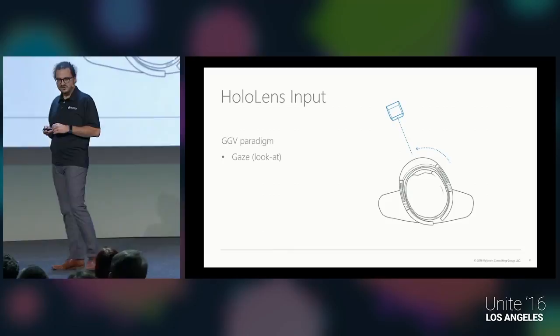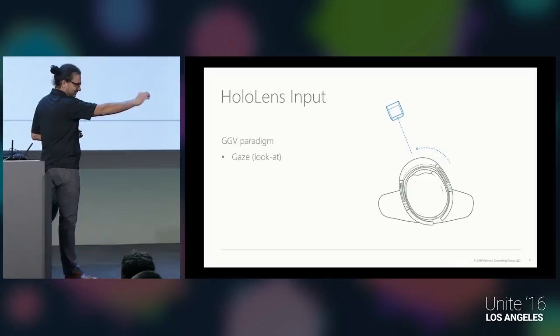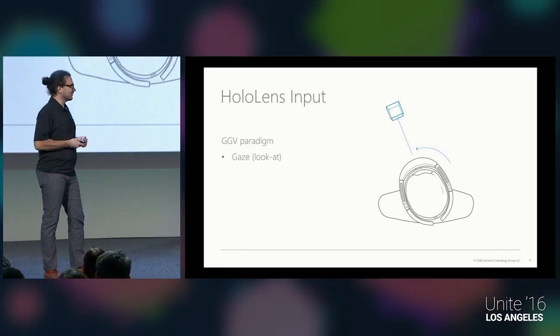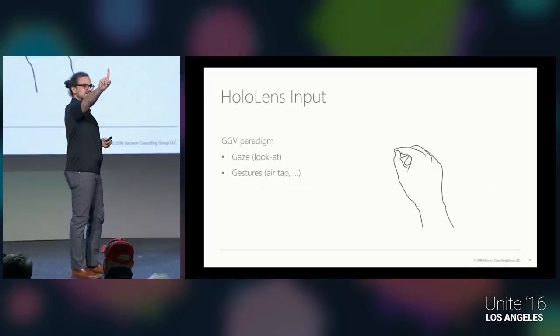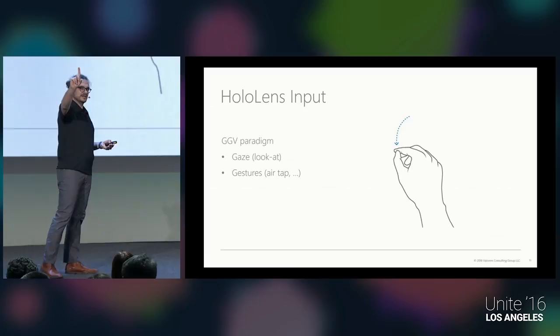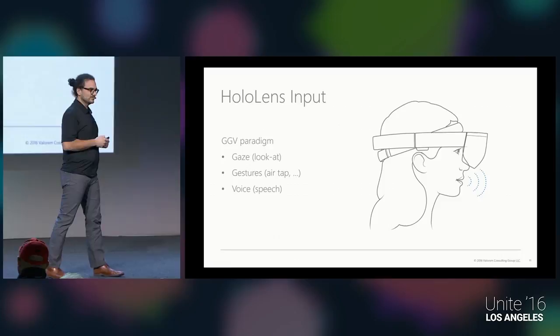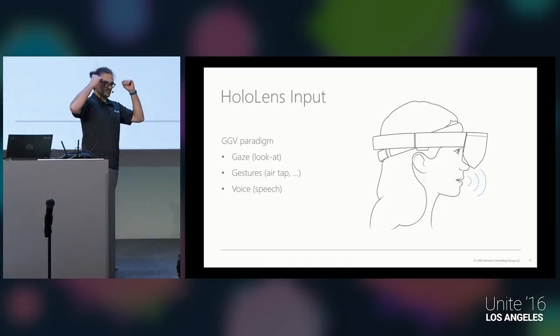The HoloLens follows the GGV paradigm — Gaze, Gesture, and Voice. Gaze works like a laser pointer shooting out from where you look; it's your mouse cursor for setting interaction focus. The most important gesture is the air tap — raise the index finger and tap — which is essentially your mouse click. Voice input is also really important because the microphone array sits right above your mouth and does a great job recognizing speech, giving you a natural user interface.